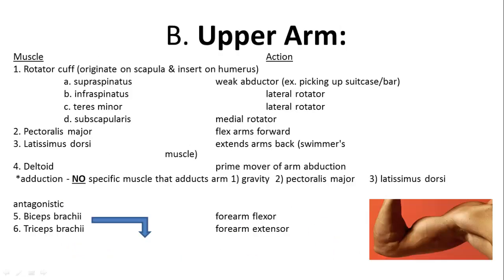In the upper arm, you have a big part of your shoulder muscle called the rotator cuff, which includes the supraspinatus, infraspinatus, teres major, and subscapularis — all on the scapula. The pectoralis major and latissimus dorsi are important for flexing and extending the arm. The deltoid is the big shoulder muscle and the prime mover of arm abduction away from the body. There's no specific muscle that adducts the arm because gravity does most of it, but the pectoralis major and latissimus dorsi can assist if needed.